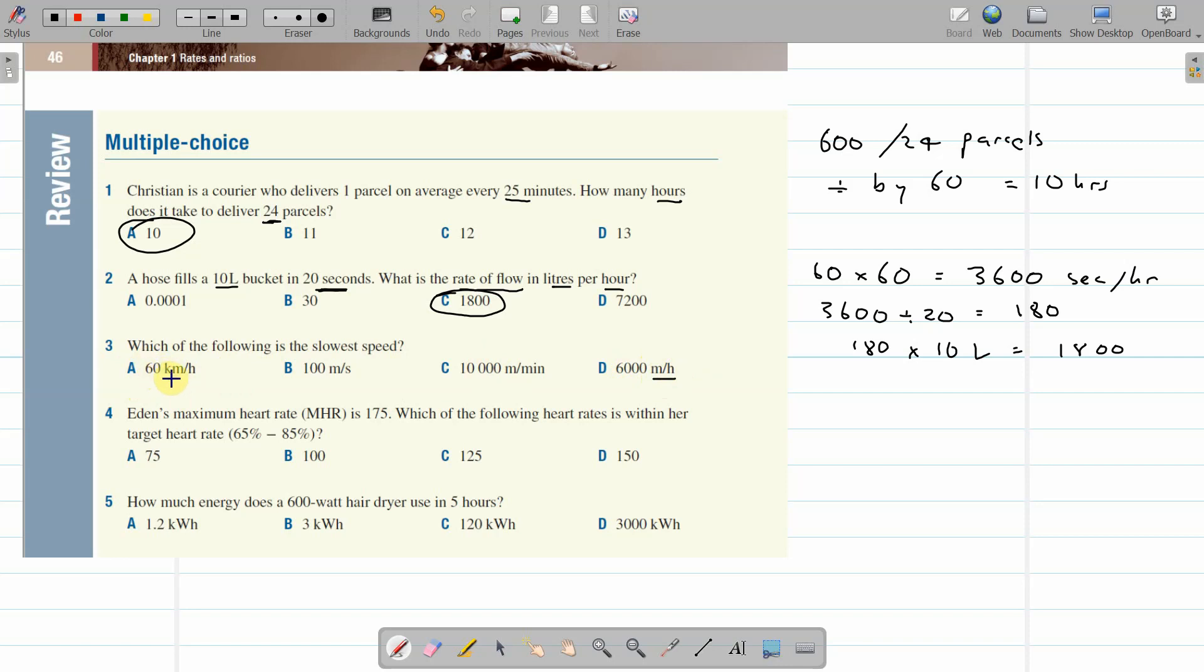60 kilometres per hour. I know there's a thousand metres in a kilometre. So that one's 60,000 metres per hour. So it's already faster than that one. 100 metres per second. Well, we've just worked out that there's 3,600 seconds per hour. So that times 3600. 3,600 seconds and 100 for every second is 360,000 metres per hour.